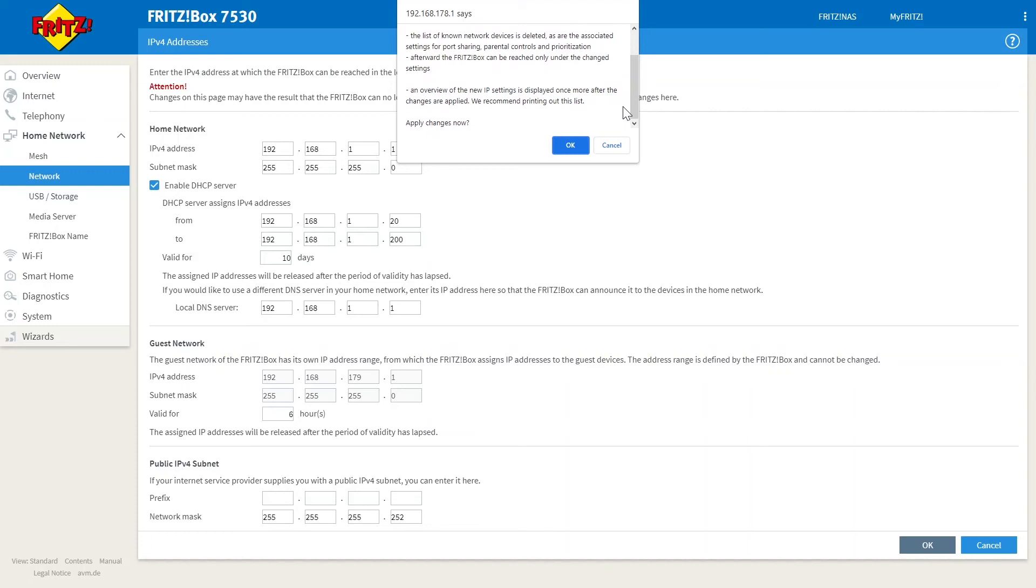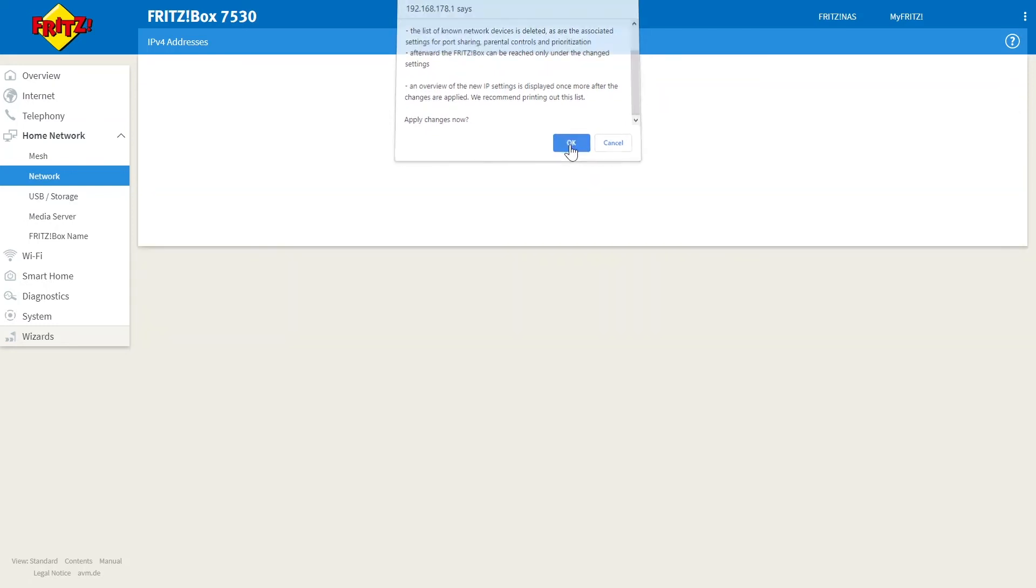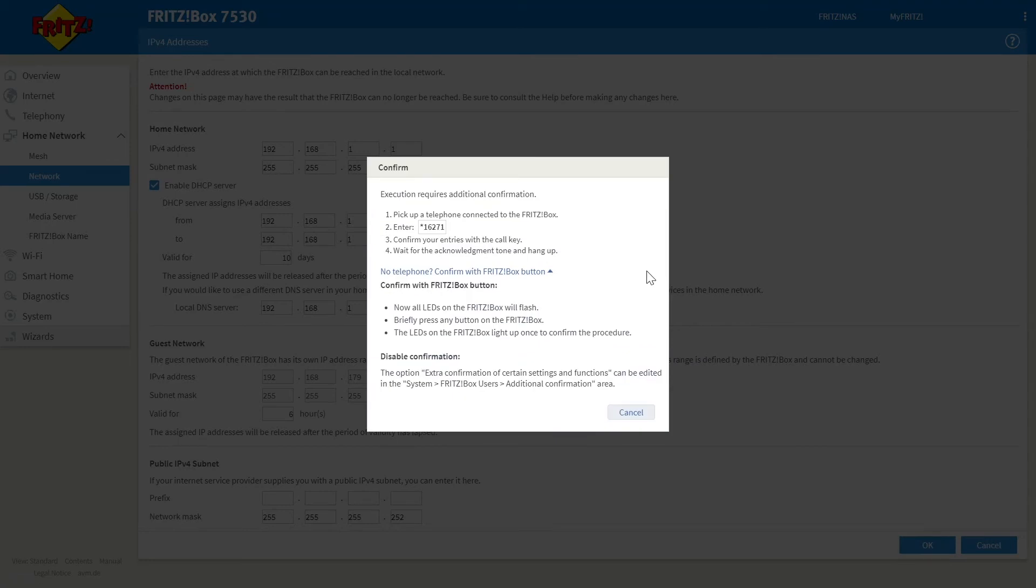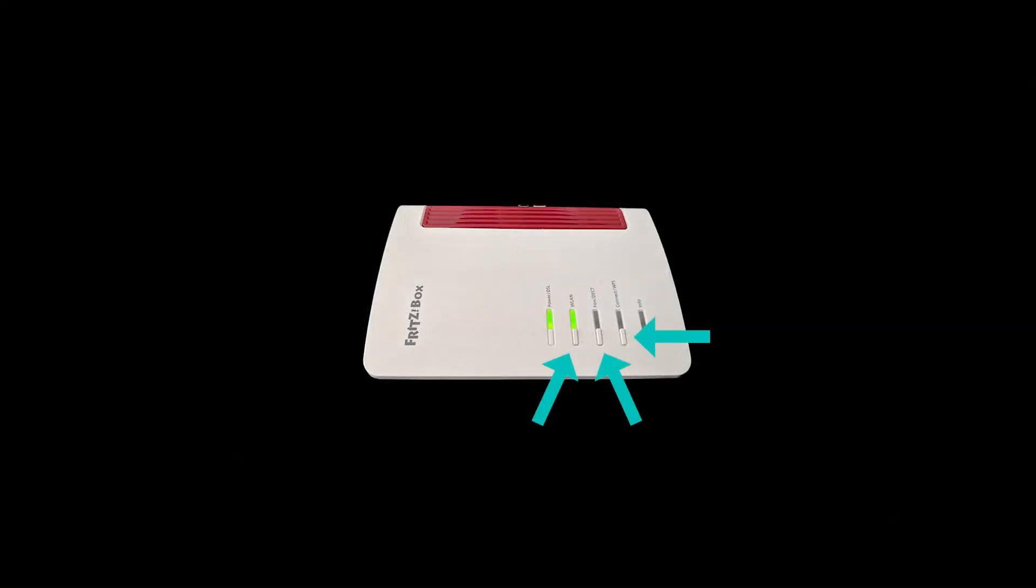So you can simply scroll down and click OK. You'll then be greeted with the second confirmation window. Here you want to click no telephone and you'll need to physically click on one of the buttons on your router as this will act as a second point of confirmation.